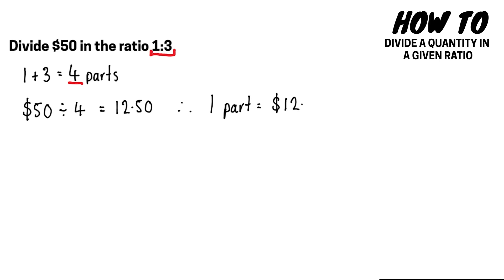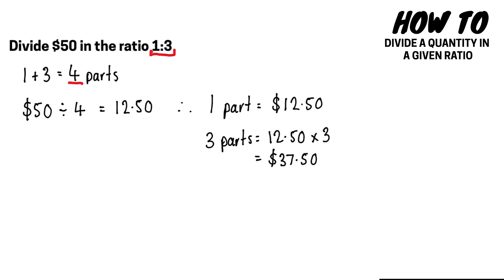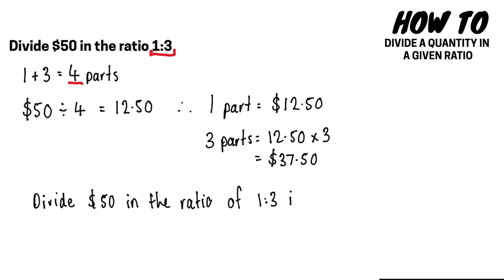Therefore, one part is equal to 12 dollars 50. To work out what the three parts of the ratio is, we multiply 12 dollars 50 by 3, and that gives us 37 dollars 50. So to divide 50 dollars in the ratio of 1 to 3, the answer is 12 dollars 50 to 37 dollars 50.